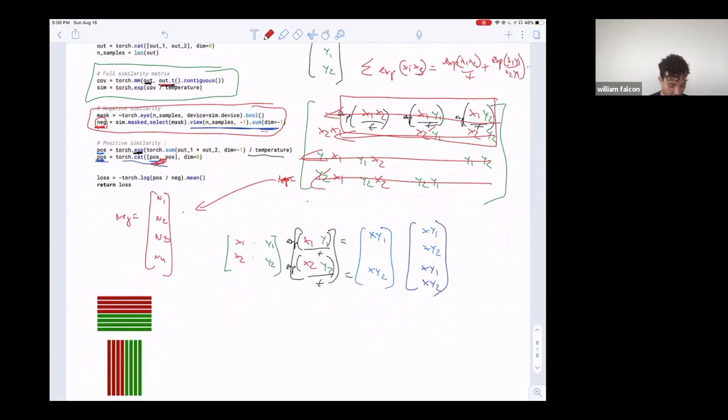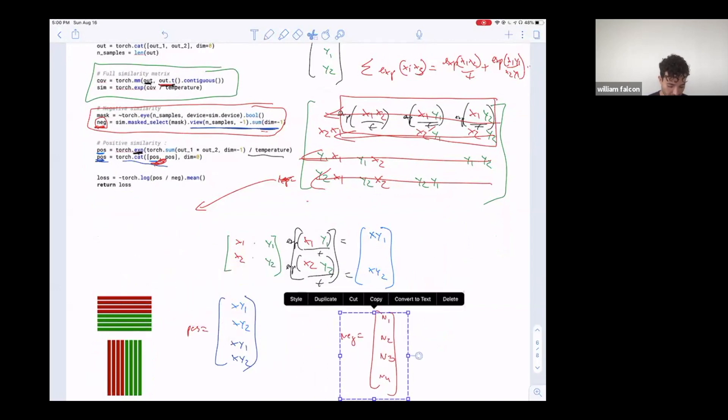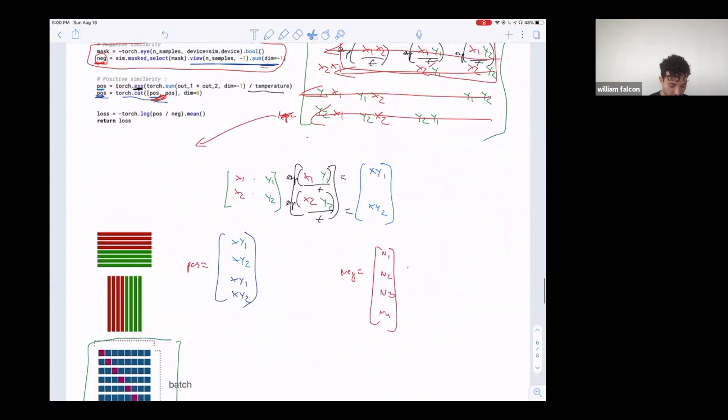And now we're back to this concatenation that we just did, right? So we concatenate those and we ended up with this here, which we're calling pos. So this is pos, and then here we have our neg. And now we are going to just divide those. So what you end up with is x·y1 divided by n1, x·y2 divided by n2, x·y1 divided by n3, and x·y2 divided by n4.